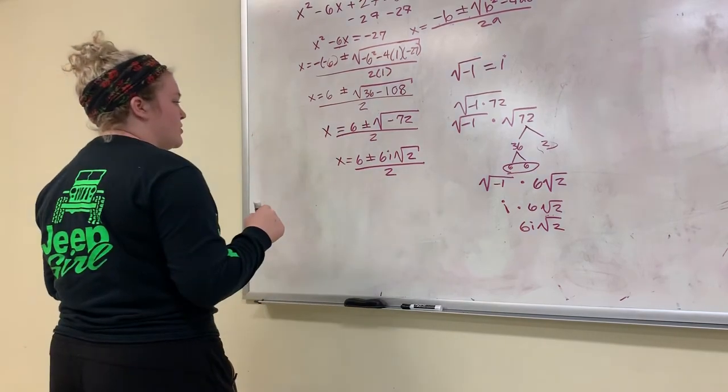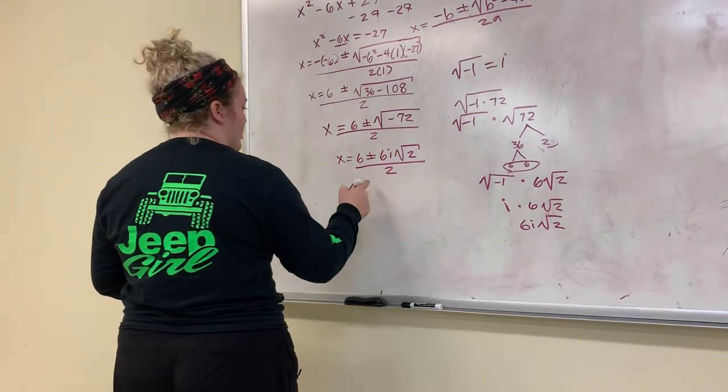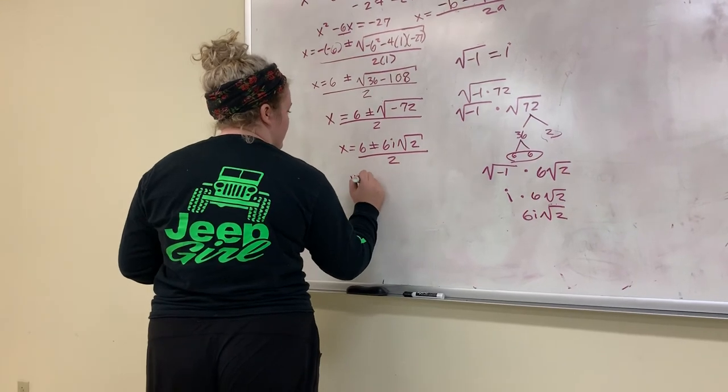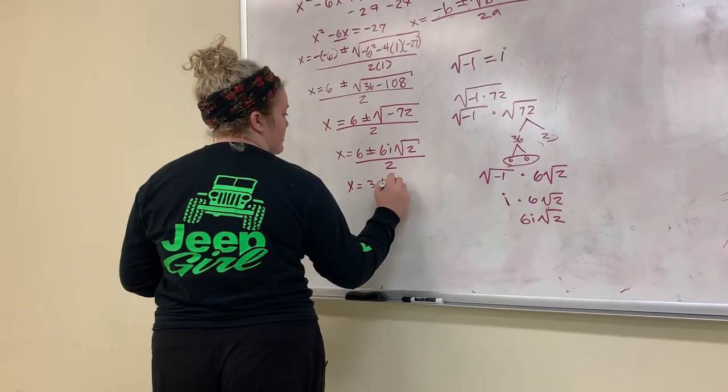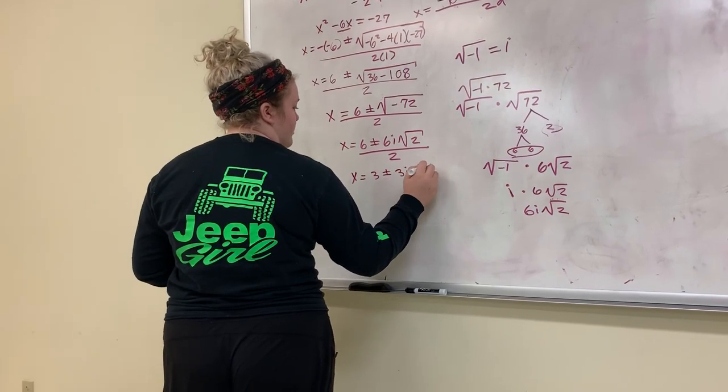And after we do that, we will just be dividing it all over 2. So this would be x equals 3 plus or minus 3i square root of 2.